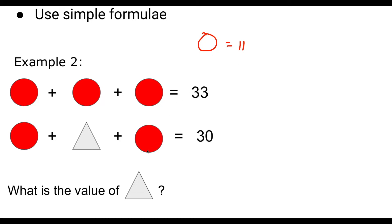If I just put a circle here equals 11, just double check. 11 plus 11 is 22 plus another 11 is 33. So we know that the circle is worth 11. Once we've got that, we need to substitute that into this equation here. So 11 plus something plus 11 equals 30. Well, we have two circles. So 11 and 11 makes 22.